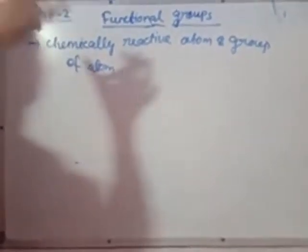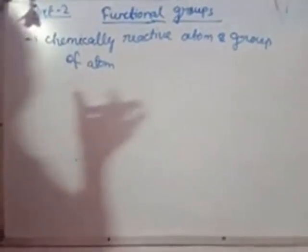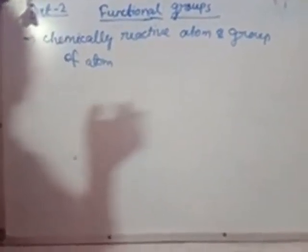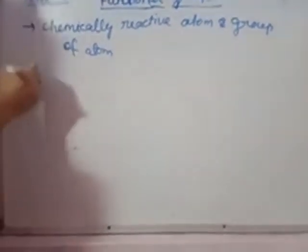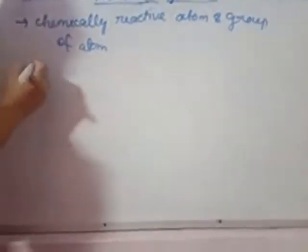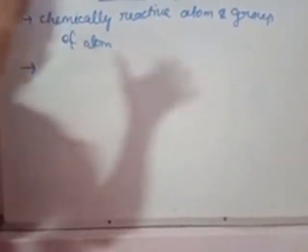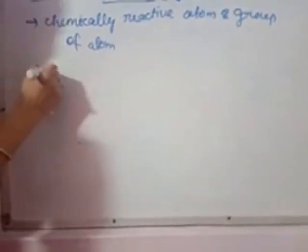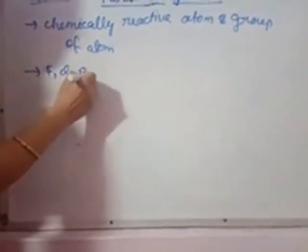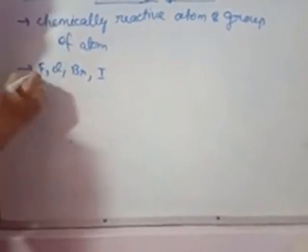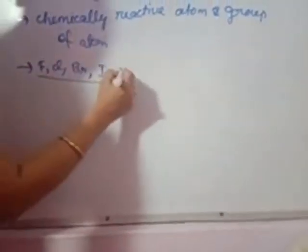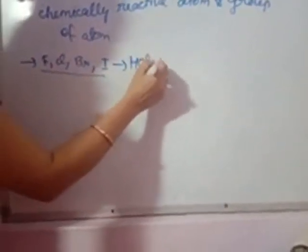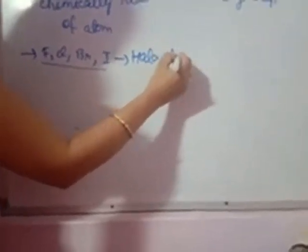Now we will read about the different types of functional groups. If any halogen — as you know, in the seventh A group of the periodic table there are fluorine, bromine, and iodine — if any of these is attached to your organic compound, then the compounds are known as haloalkanes, because halogens are attached.